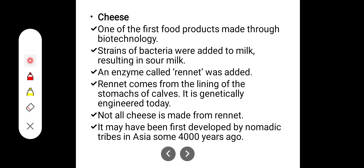In the case of cheese, it was one of the first food products made through biotechnology in ancient times. Strains of bacteria were added to milk, resulting in sour milk. Then an enzyme called rennet was added. Rennet comes from the lining of the stomach of calves. It is genetically engineered today, and this practice existed in Asia from some 4,000 years ago.